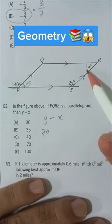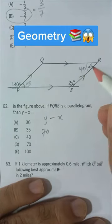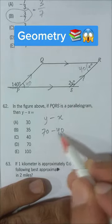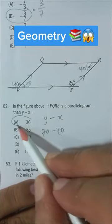Now this angle and this angle, they are equal. So X is also 40. 70 minus 40 is 30, that's our answer choice A.